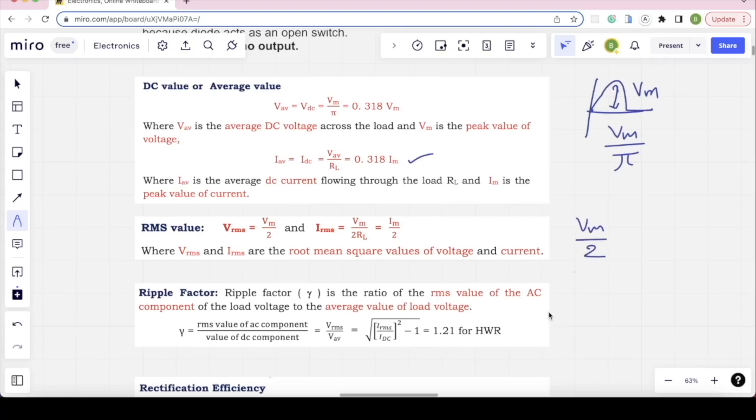Ripple factor is nothing but how much AC component is present in your output. Ripple factor is V RMS by V average. Calculate it. For half-wave rectifier, we will get 1.21 ripple factor. This is very important. What is the ripple factor in the half-wave rectifier?